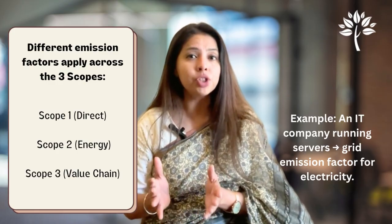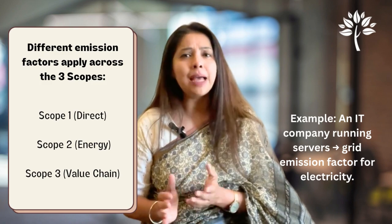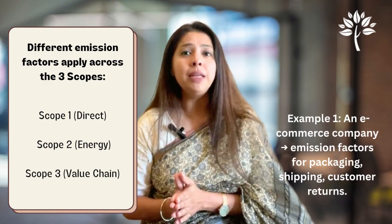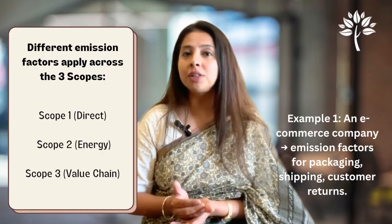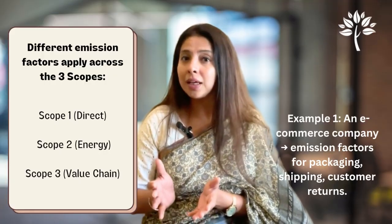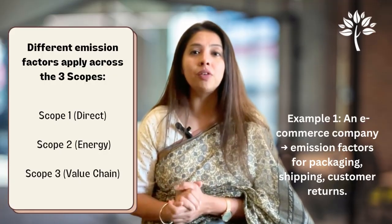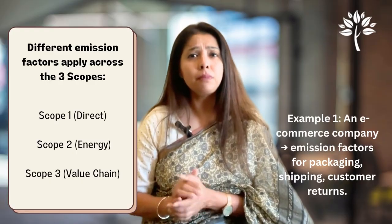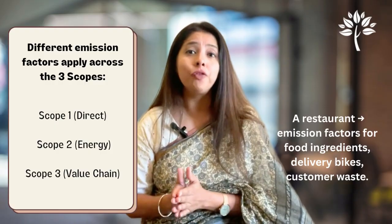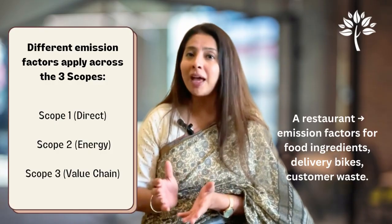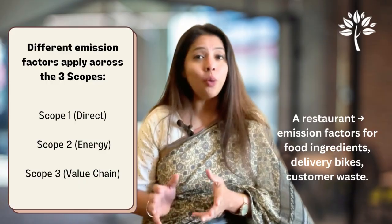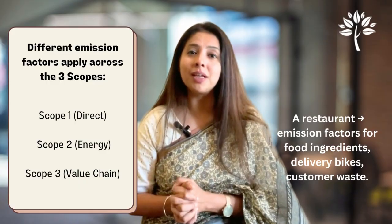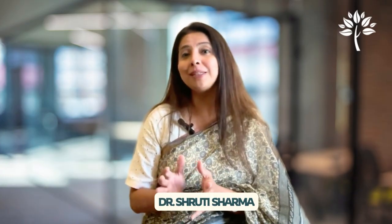Scope 3 covers value chain emissions. An e-commerce company can refer to emission factors for packaging, shipping, and customer returns to calculate their carbon footprint. A restaurant can refer to emission factors for food ingredients, delivery bikes, and customer waste. Scope 3 accounts for 70 to 90% of carbon dioxide emissions for most companies.